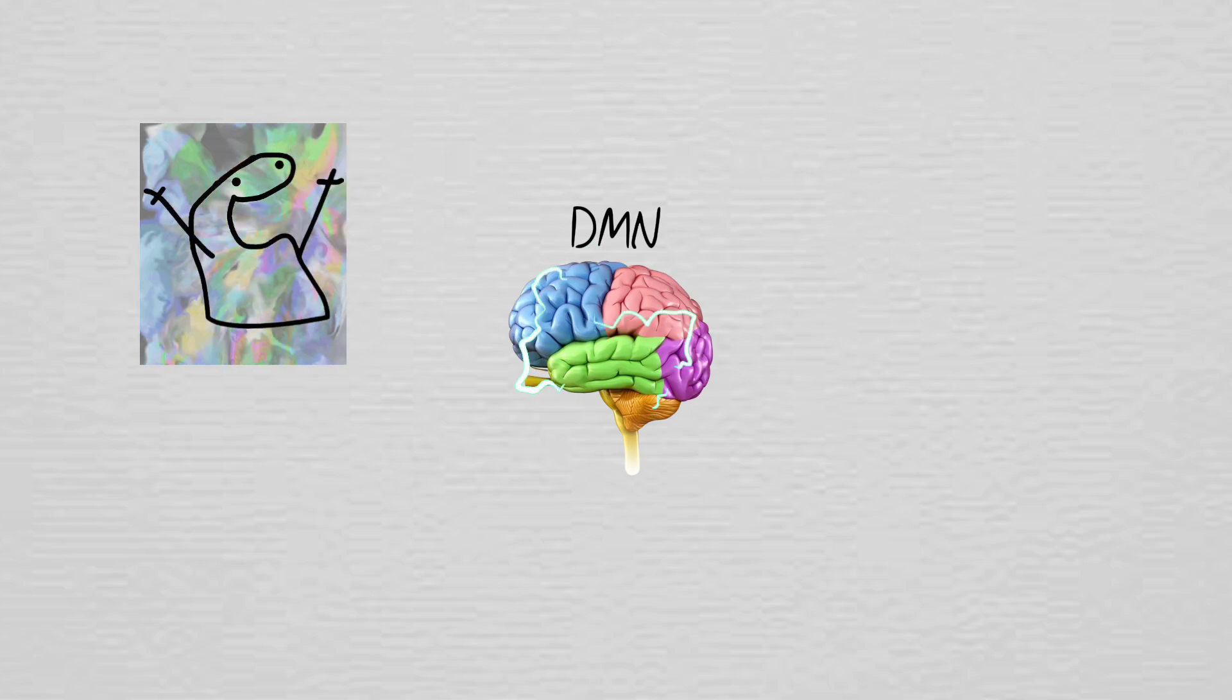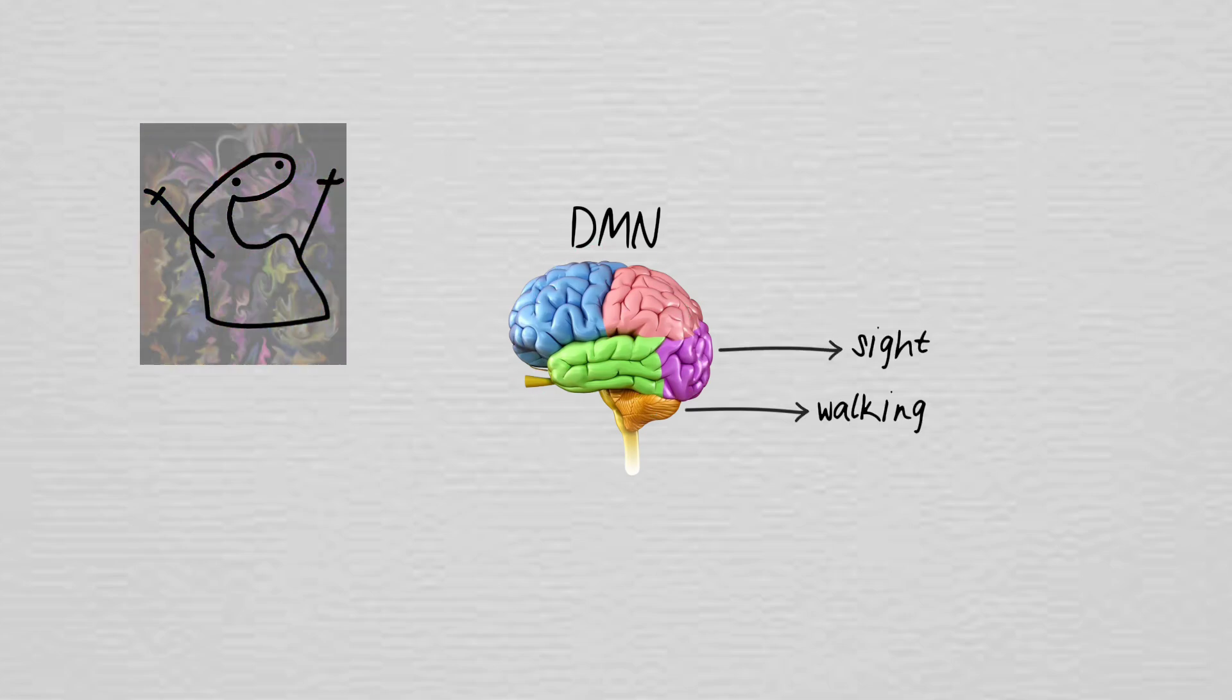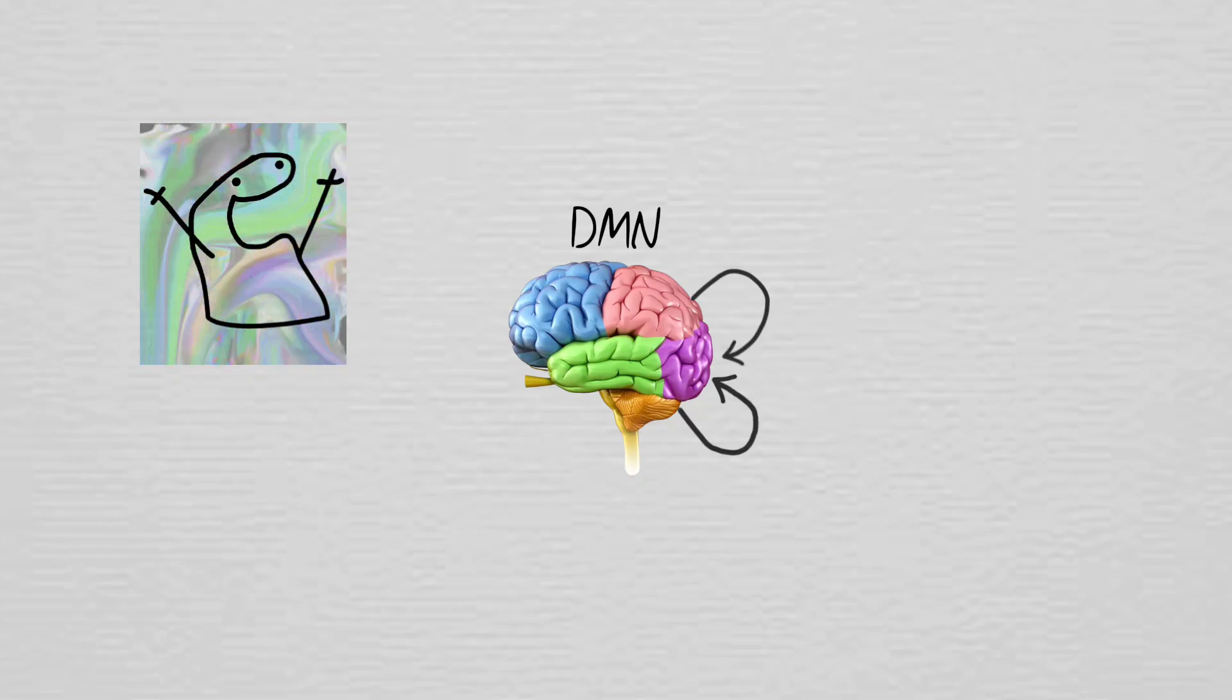At the same time, your brain's communication lines go haywire. Normally, different regions have their own jobs, but under psilocin, everything starts talking to everything. Your visual cortex gets bombarded with signals from other parts of the brain, causing crazy hallucinations.